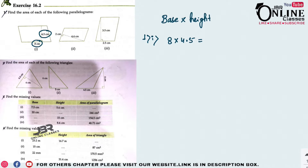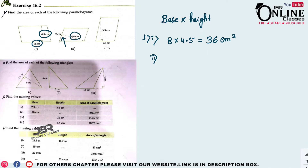So 8 × 4.5 gives the area of the parallelogram, which equals 36 cm². For the next one, the perpendicular is shown as a dotted line at 90°, so 4.4 is the height and the base = 2 cm.